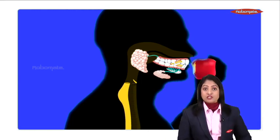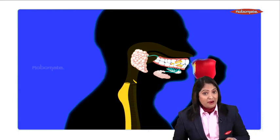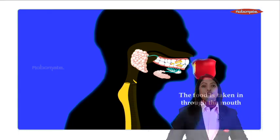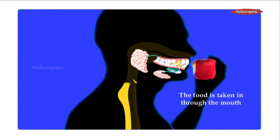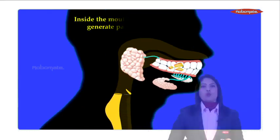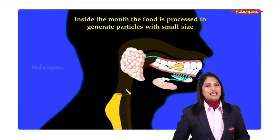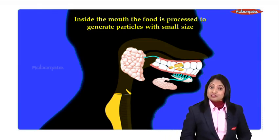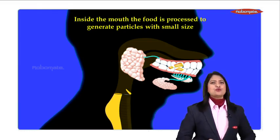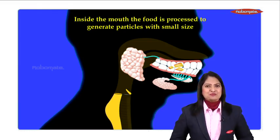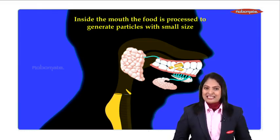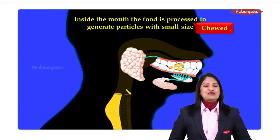The food is taken in through the mouth. Once inside the mouth, the food is processed to generate particles with small size. And who helps us to do this? The natural mixers present in the mouth called the teeth. They do the process of chewing by which the food that we eat is broken down into particles with small size.